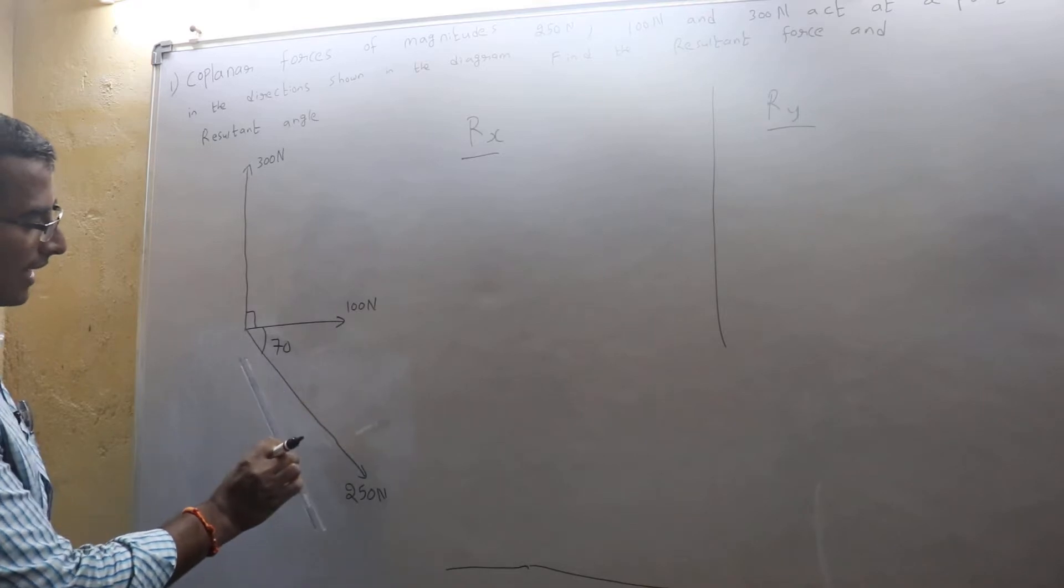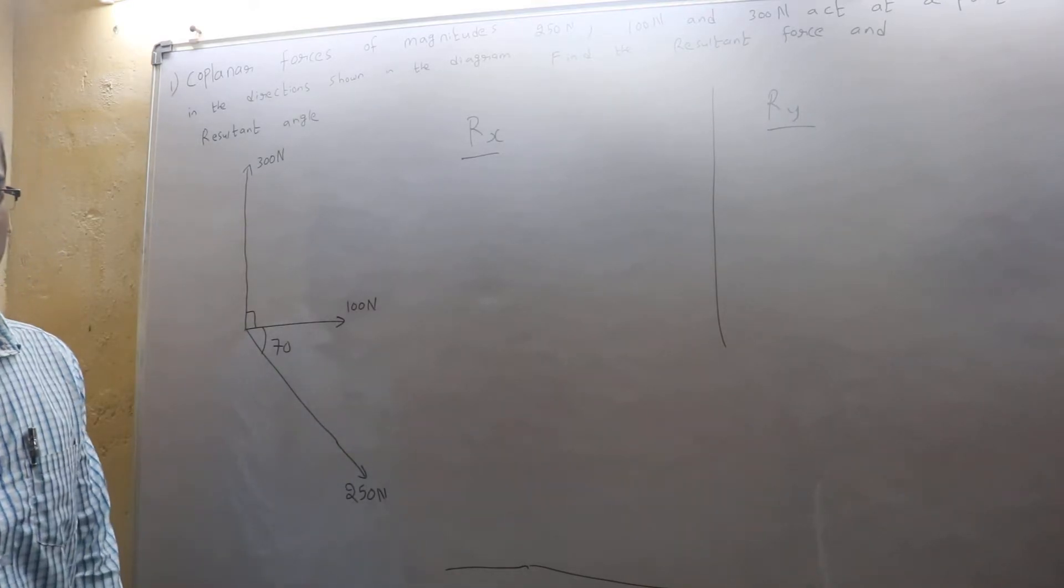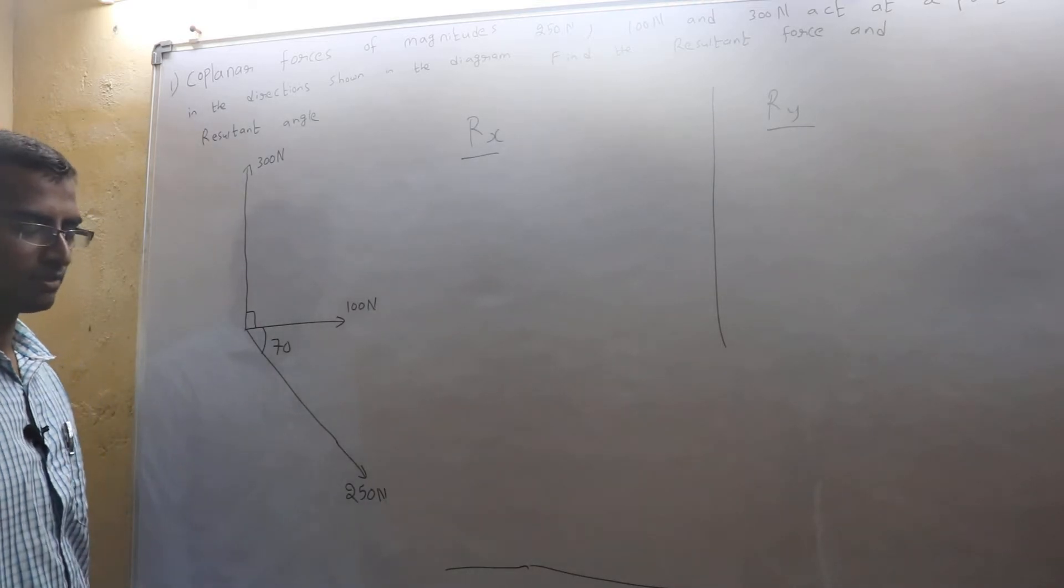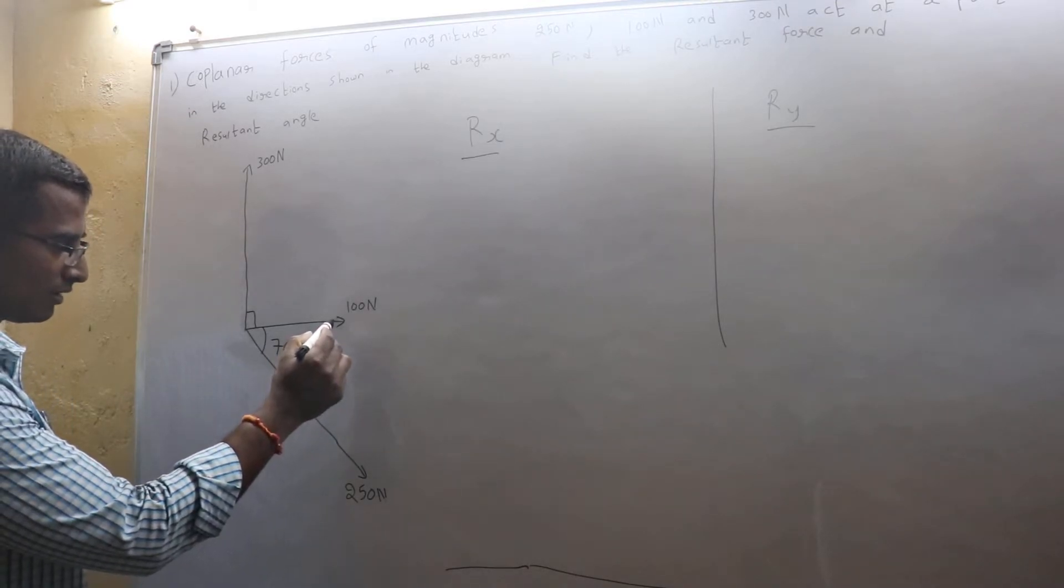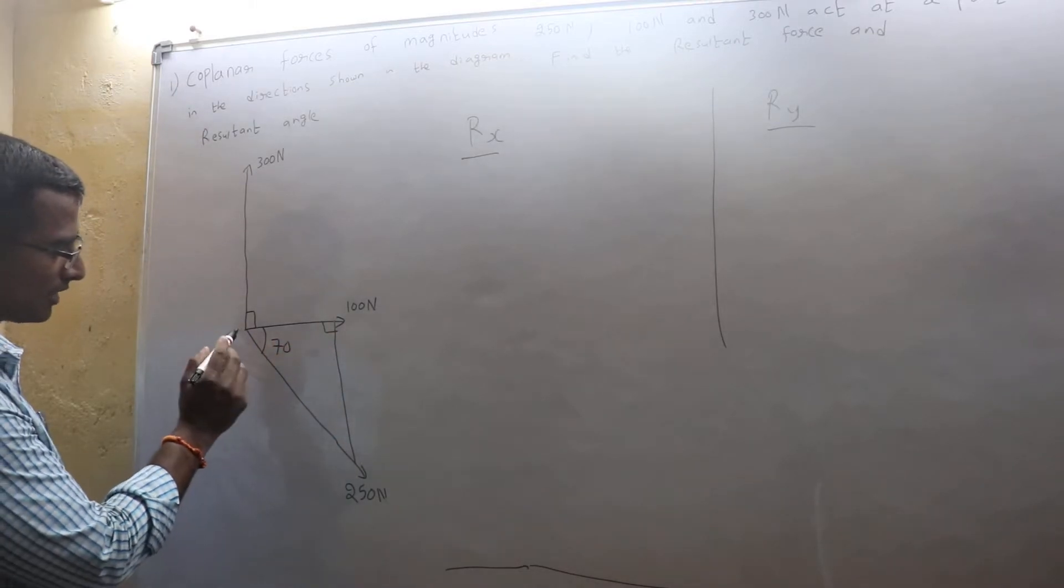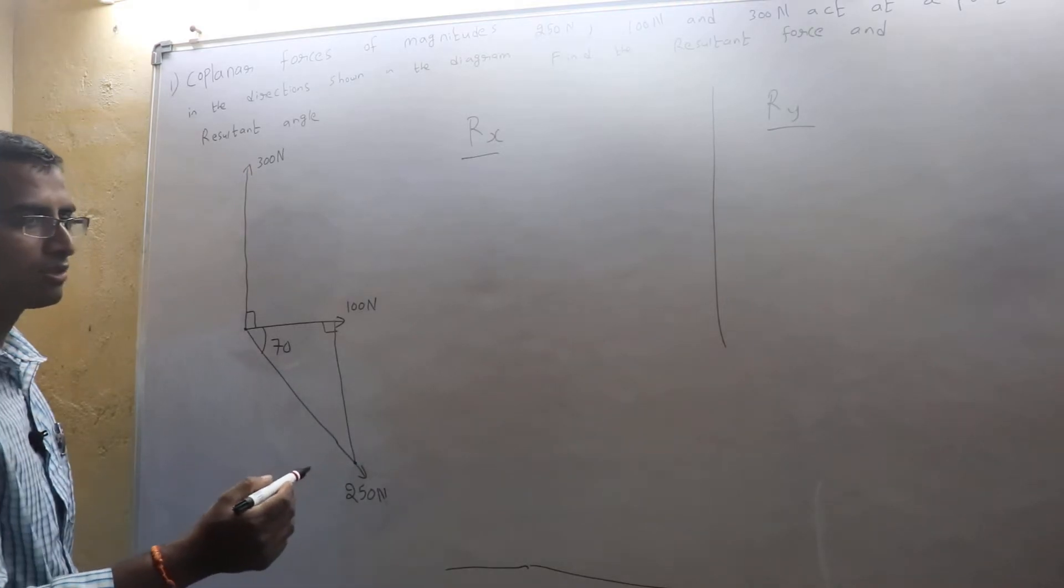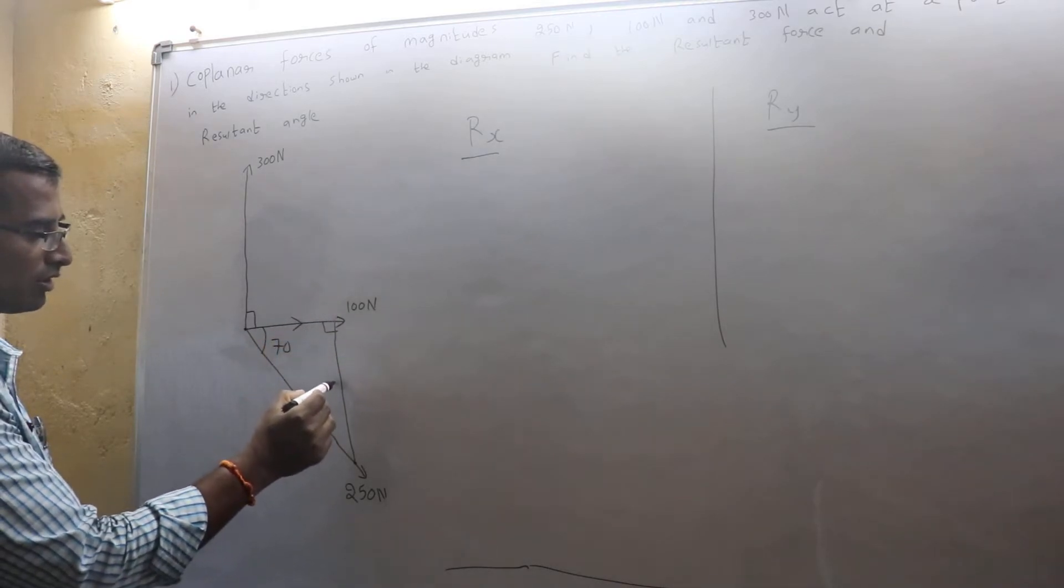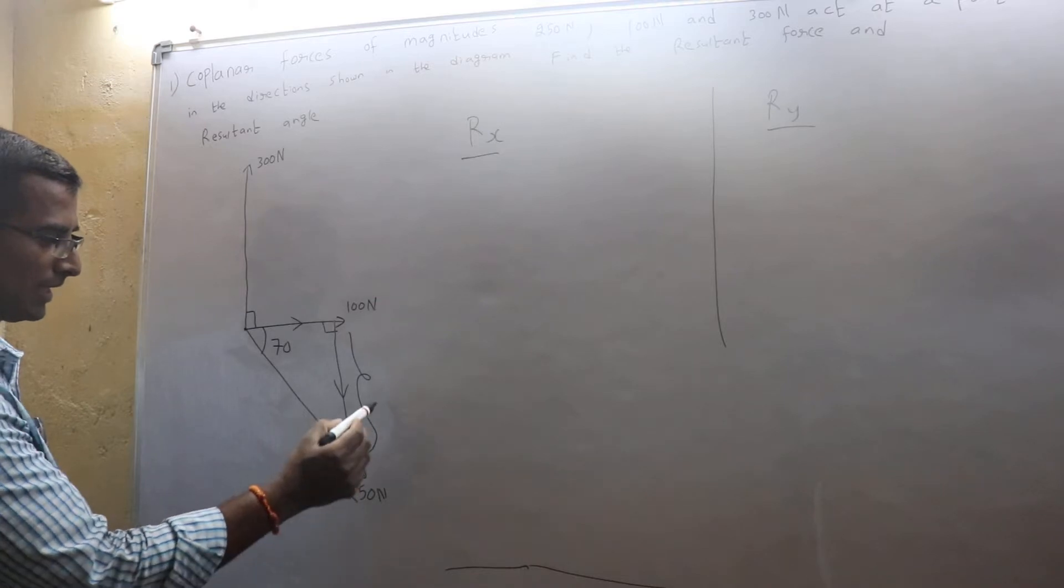But 250 is acting at an angle of 70 degrees, so this 250 should be resolved. To resolve this 250, I need to form a right angle triangle. To make a right angle triangle, I need to drop a line over here. Next, you are walking from this point to this point. You could have chosen the other way, which is going from here to here, then from here going down.